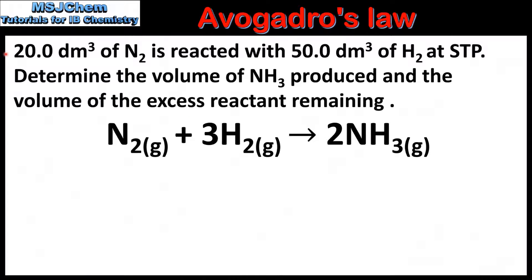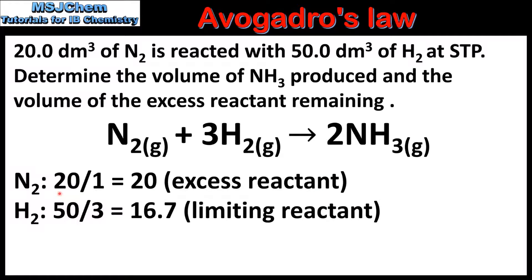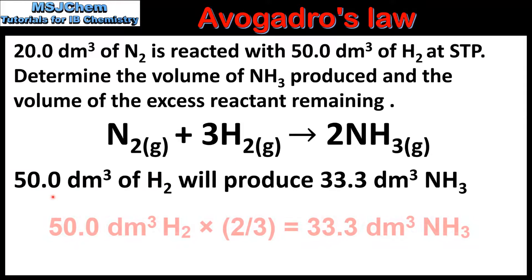In our next example we have 20 cubic decimetres of nitrogen reacting with 50 cubic decimetres of hydrogen at STP. Determine the volume of ammonia produced and the volume of the excess reactant remaining. In this reaction, which is known as the Haber process, nitrogen and hydrogen react together to form ammonia. The first step is to determine the limiting reactant. For nitrogen we divide the volume by the coefficient in the balanced equation, which gives us 20. For hydrogen we get 16.7, which tells us that hydrogen is the limiting reactant. The molar ratio of hydrogen to ammonia is a 3 to 2 ratio.